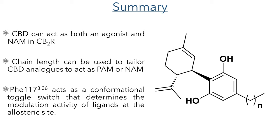In summary, CBD can act as both an agonist and a negative allosteric modulator in the CB2 receptor. By modifying this molecule and changing the chain length, this activity can be tailored to act as either a positive or a negative allosteric modulator. This activity is due to phenylalanine-117, which acts as a conformational toggle switch that determines the activity of ligands within the allosteric site and how the receptor responds to orthosteric agonists.